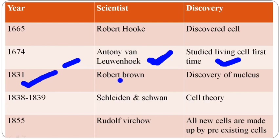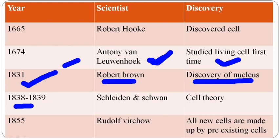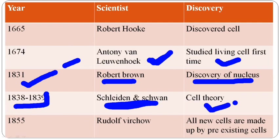Next, in the year 1831, Robert Brown, the scientist, discovered the nucleus. Then in 1838 to 1839 came Schleiden and Swan. These two scientists — one was a zoologist and one was a botanist — gave the cell theory.